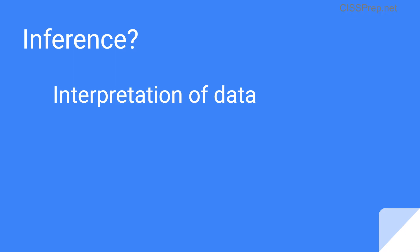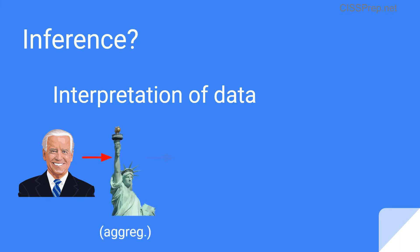So what is inference? Inference is the act of interpreting the data you've collected. It's using the power of deduction to obtain information that you shouldn't — making some type of decision from the information. Continuing with our example, the media aggregated the places visited by the president: first the Statue of Liberty, then the Eiffel Tower. Assuming those were the only two data points, they analyze the data and infer that his next location will be the Taj Mahal — and that information, let's assume, is top secret. So again, aggregation is the collection, and inference is the interpretation, and the two usually go hand in hand.